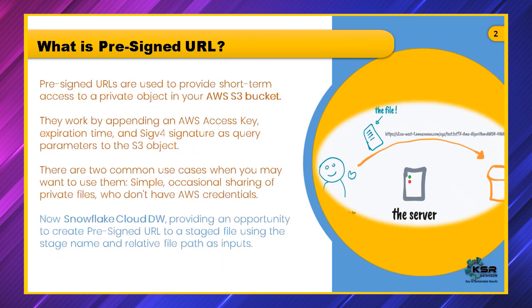Pre-signed URLs are used to provide short-term access to private objects in your AWS S3 bucket. This has been introduced by AWS. So if you want to give access — for example, there is some data available in the cloud — your manager is asking for those metrics to be accessed for a certain time. Probably he wants to download it and use it to take informed decisions.